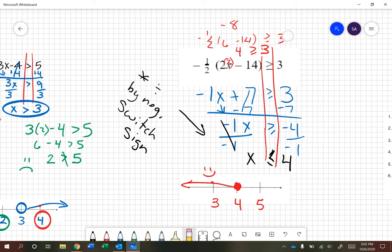And then if I go and plug it in for a non-solution, like 5 here, I'm going to try 5. So I plug a 5 in here. 2 times 5 is 10. Minus 14 is negative 4. 2 times negative 1 half is greater than or equal to 3. So negative 1 half times negative 4 will give me 2. Is 2 greater than or equal to 3? Nope. So this is not a solution, which is what we have right there.